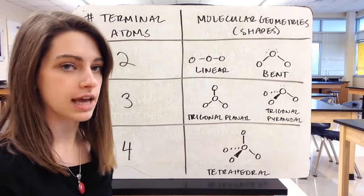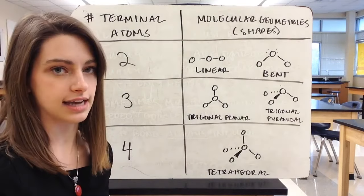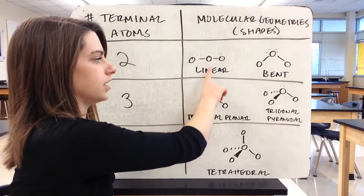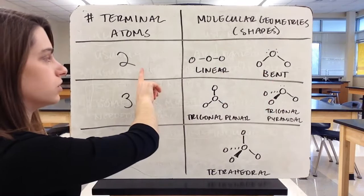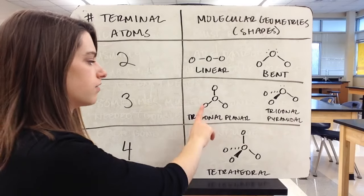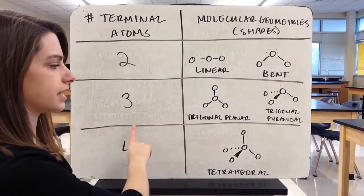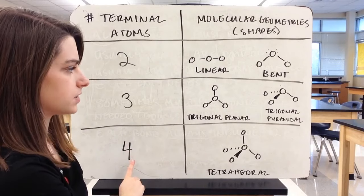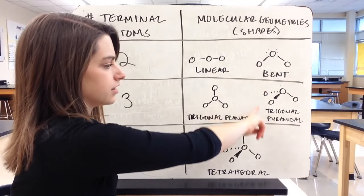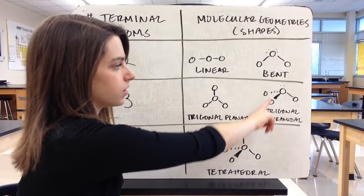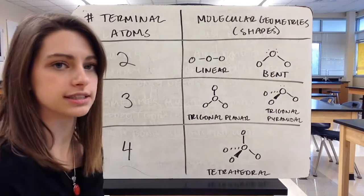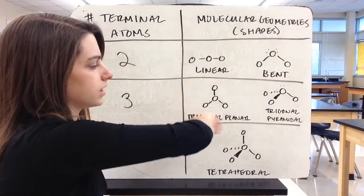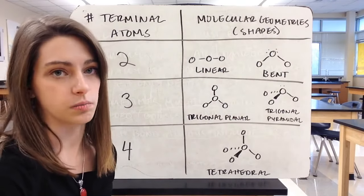There are other shapes with expanded octets, but we're focusing on these five. Linear and bent with two terminal atoms, trigonal planar and trigonal pyramidal with three terminal atoms, and tetrahedral with four terminal atoms. Note that bent and trigonal pyramidal both have lone pairs of electrons - that's what causes those shapes to be bent. They're planar or linear only if they don't have any lone pairs of electrons.